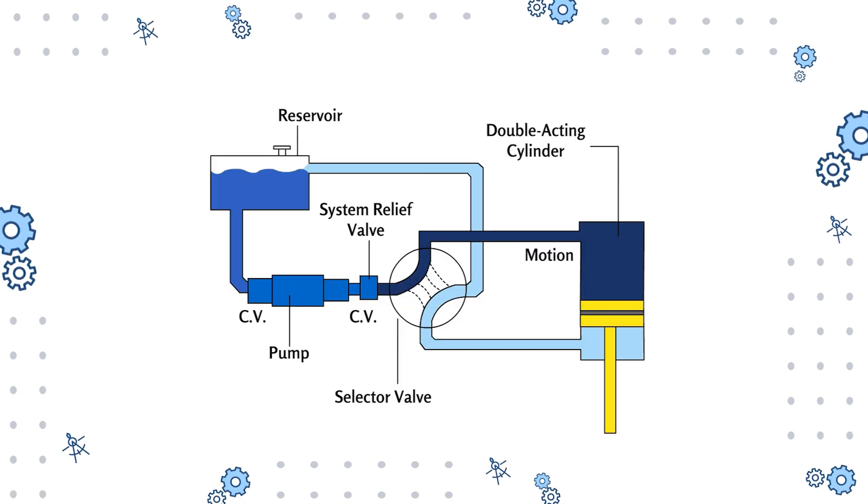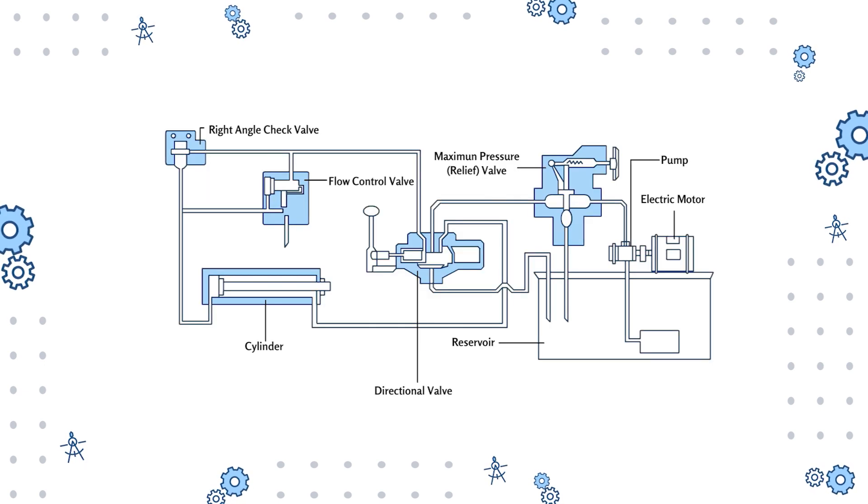A valve is used to control the flow of hydraulic liquid in the circuit. Valves can be of various types. A directional valve controls the direction of the fluid, while a flow control valve regulates the flow in the hydraulic circuit. A pressure relief valve is used to maintain the required pressure in the system.